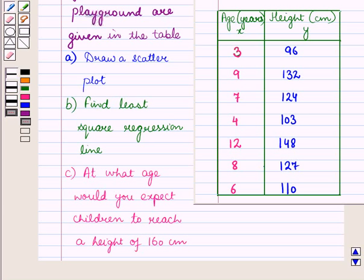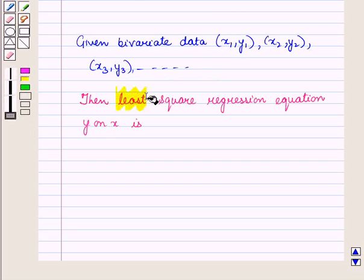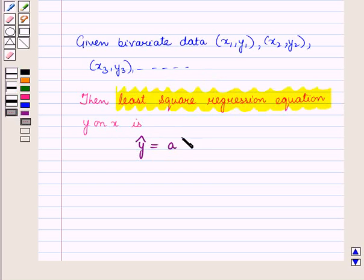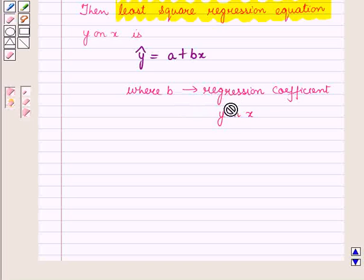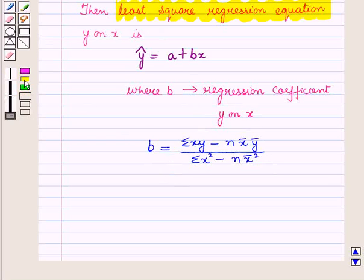Before starting the solution we should know a key result. Suppose we are given bivariate data given by the ordered pairs x1 y1, x2 y2, x3 y3 and so on. Then the least square regression equation y on x is given by y-hat is equal to a plus bx, where b is the regression coefficient y on x, given by the formula: b equals summation of xy minus n times x-bar times y-bar, all divided by summation of x-squared minus n times x-bar squared.